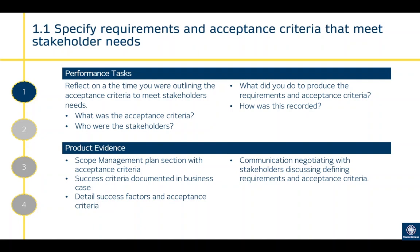Your acceptance criteria is what the project sponsor will accept at handover — what whoever this project has been handed over to will accept. If they don't accept it at that point, there has to be rework or change to ensure it meets their needs. So you're specifying and documenting in your scope management plan what the acceptance criteria and requirements are. Reflect on how you outlined the acceptance criteria to meet stakeholders' needs, what the requirements were, what you did to produce them, and how you recorded and documented this.